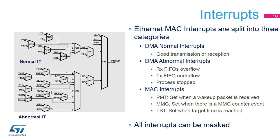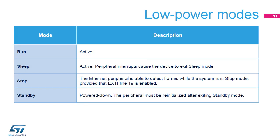The Ethernet MAC peripheral supports various interrupts. All these interrupt lines can be masked and converged to the same output signal, as shown on the diagram. For transmission and reception interrupts, a distinction is made between normal and abnormal operations. Abnormal operations refer to process aborted or FIFOs in overflow or underflow state. Special MAC features have their own interrupts. In low-power mode, wake-up packet reception is signaled on the PMT line. Any update of MMC counters can trigger an interrupt, and an interrupt line is dedicated to the precision timing protocol.